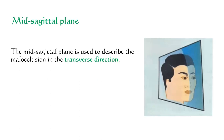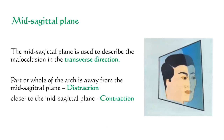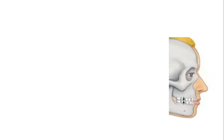The mid-sagittal plane is used to describe malocclusions in the transverse plane. If the whole or part of the arch is away from the mid-sagittal plane, it is called distraction; if it is closer, it is called contraction. In summary, Simon used three reference planes — Frankfurt horizontal, orbital, and mid-sagittal — to classify malocclusions in the vertical, anteroposterior, and transverse planes respectively.